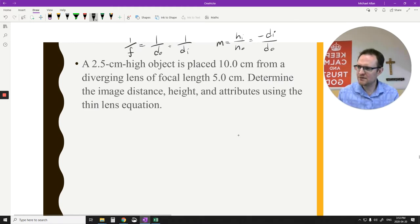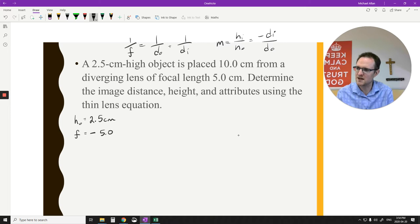So we have a 2.5 centimeter high object, so that's the height of the object. Now remember, heights of objects and distance of objects are always positive numbers, always considered real. Even if this object was upside down, I'd still consider it to be positive 2.5 centimeters. It's placed 10 centimeters away from a diverging lens. The diverging part tells us that this focal length is a negative number, and it tells us it's 5 centimeters.